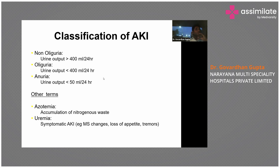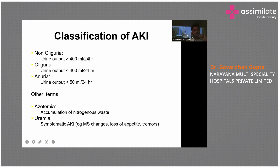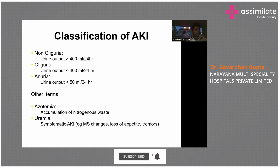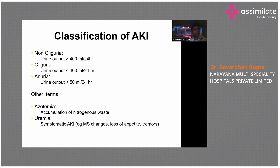Urine output does not always drop; sometimes urine output remains adequate but creatinine keeps rising — this is called non-oliguric AKI. Oliguria in nephrology is defined as urine output less than 400 ml in 24 hours, while in general medicine it is 500 ml. Anuria is defined as urine output less than 100 ml — some follow less than 50 ml in 24 hours.